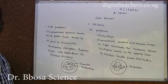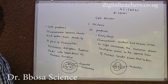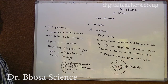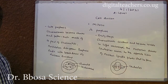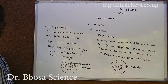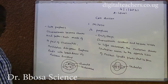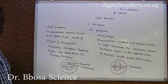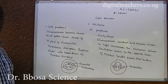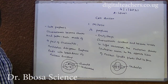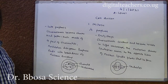In late prophase, chromosomes become shorter and fatter, each made of a pair of chromatids. Then the nucleolus disappears. Prophase ends with the breakdown of the nuclear envelope. The chromatid is one strand of the chromosome, and two chromatids are joined together at a point called the centromere.